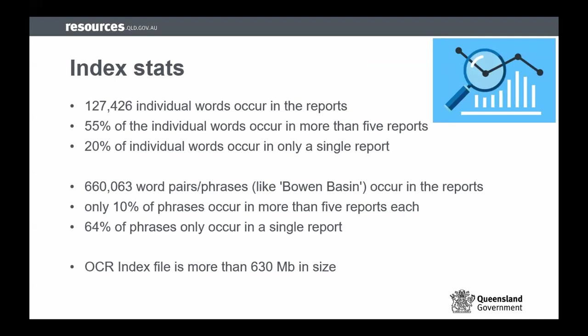Here are some stats about the index. There are more than 127,000 individual unique words across all the reports. More than half are pretty common and occur in quite a few reports, but 20% only occur in a single report — which is interesting. There are some pretty cool words in there, and some weird ones too, like 'hippo.' When you combine words together, there are more than 660,000 word pairs and triples — things like 'bond basin' or 'coal measures.' Only 10% of those are common across multiple reports, and more than 60% only occur in a single report, which tells us there's probably space to clean the index up. This is the first version and will be updated and improved.